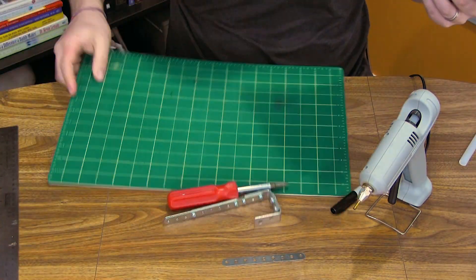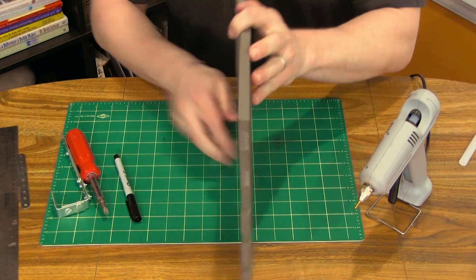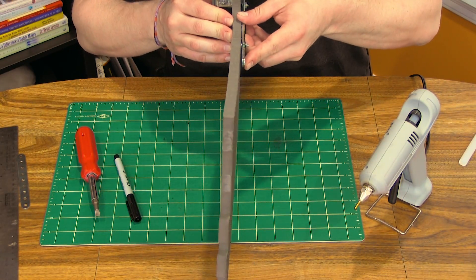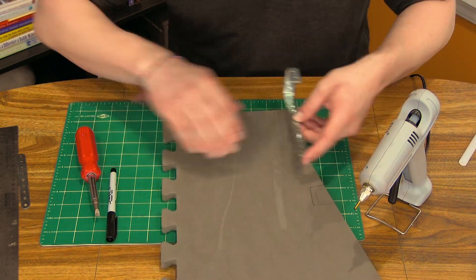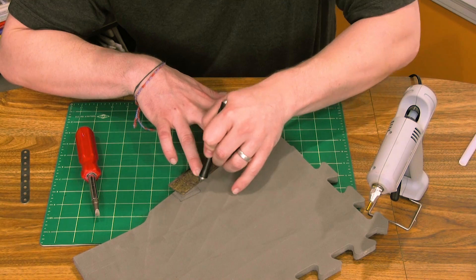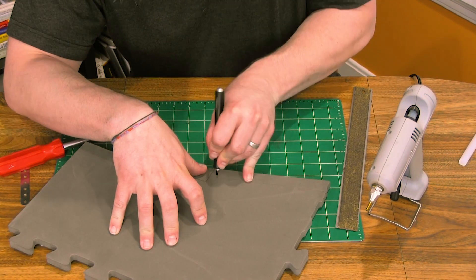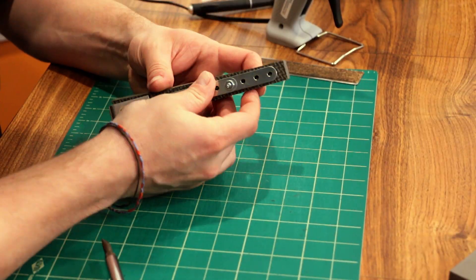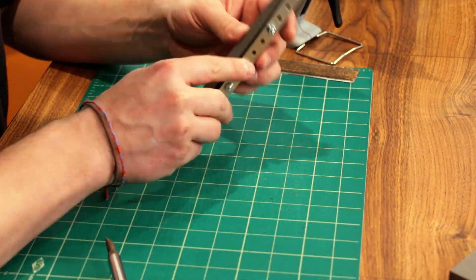So some extra EVA foam material got measured and cut to act as padding between the mount and the helmet. Since it also reduces the amount of space between the corner braces, the helmet can't wiggle around as much. You could put more padding on the other parts of the braces that touch the helmet, but since that would have made it more noticeable, I didn't do that.